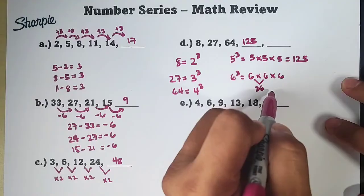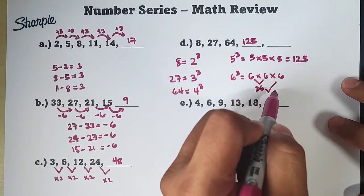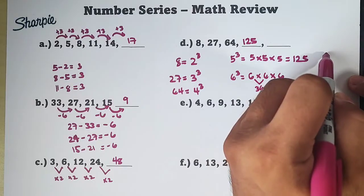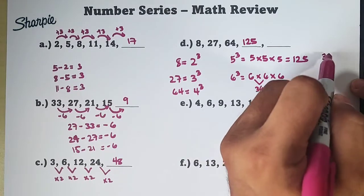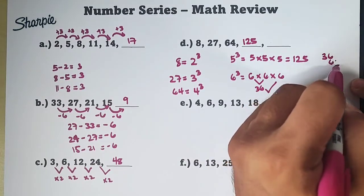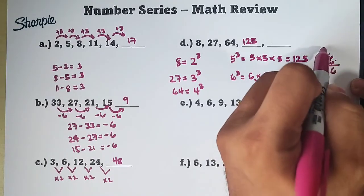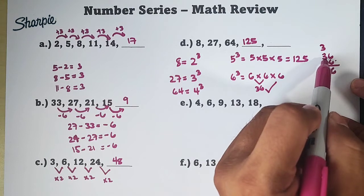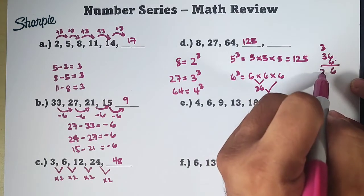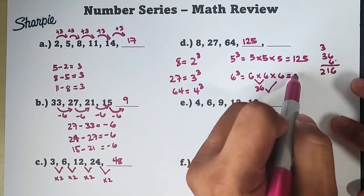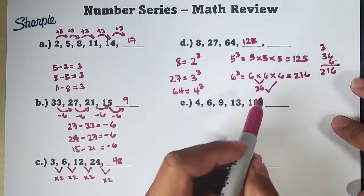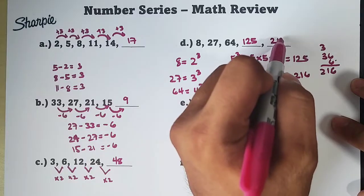For 6 cube, that is also equal to 6 times 6 times 6. Sir, mahirap po yan. Ganito na lang, i-breakdown mo na lang. 6 times 6 is 36. Tapos, 36 times 6. I-multiply natin to another space natin. 36 times 6. Ito yung maging 6, 3. 3 times 6, which is 18. Plus 3. That is 216. Ibig sabihin, guys, yung 5th term natin is 216.